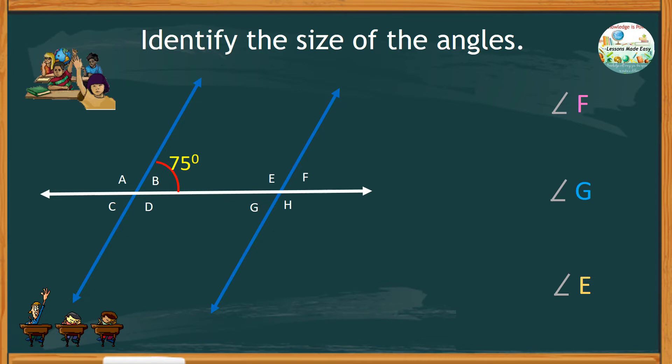What do you think about the sizes of these angles? Let's start with angle F. Study the relationship of angle F with angle B. Clearly, they are corresponding angles, and therefore, they are equal.